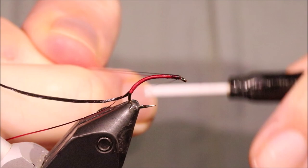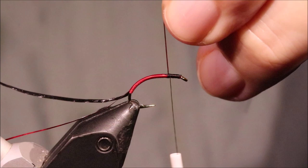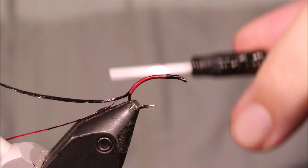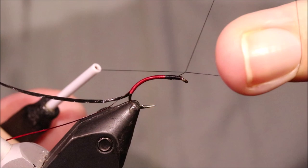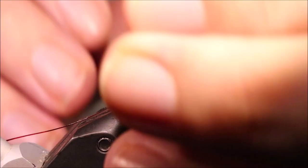I'm going to change my threads. Black. I'll run this back to where the thorax is going to stop. I'll just put a wee half-hitch in.